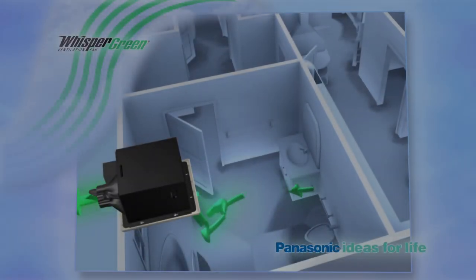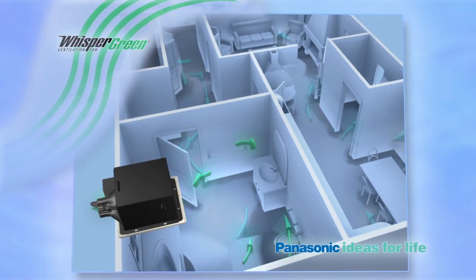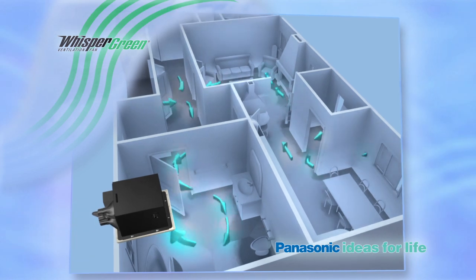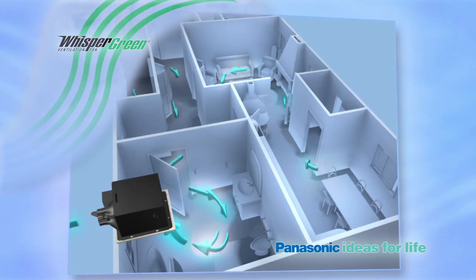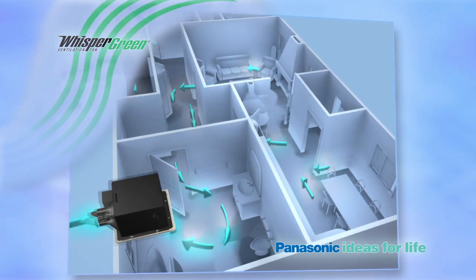Delivering fast, effective spot ventilation when you need it, a Panasonic Whisper Green vent fan also works continuously on a lower setting to help remove stale air and pollutants from your entire home.